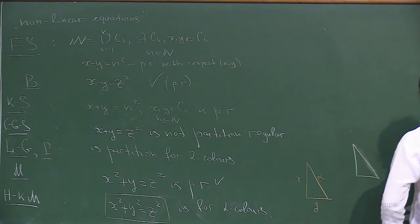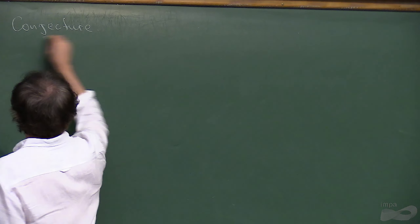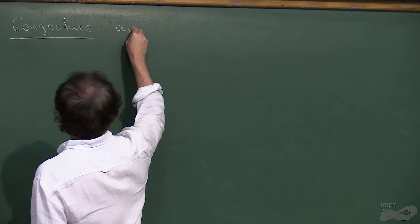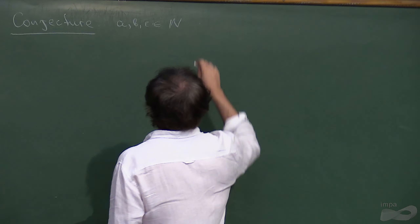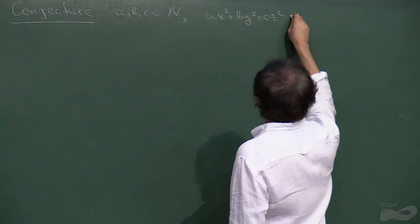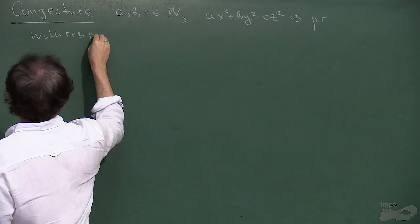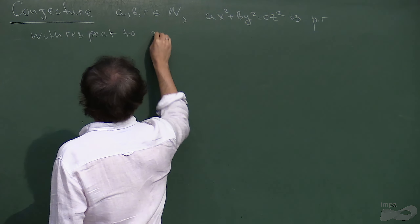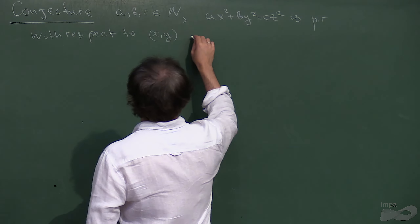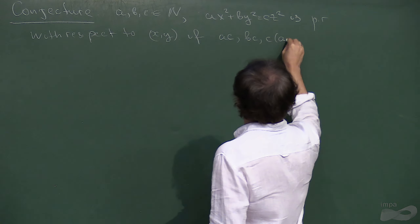In general, I'm interested in the following conjecture for given natural numbers A, B, C: the equation A·x² + B·y² = C·z² is partition regular with respect to x and y — meaning x and y are the same color, z possibly another — if and only if at least one of A·C, B·C, or C·(A+B) is a perfect square.